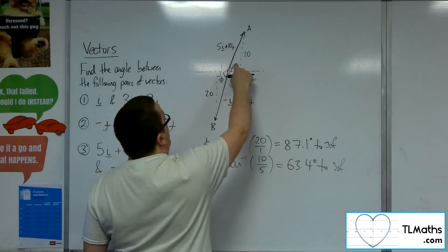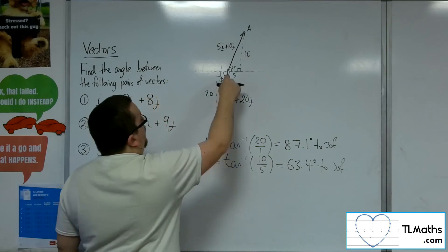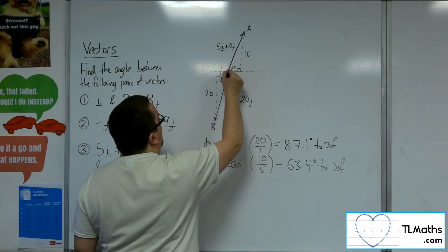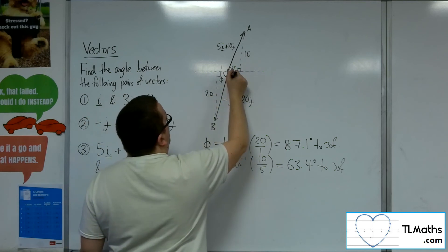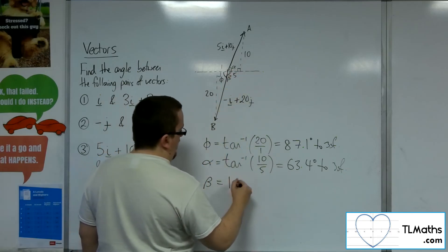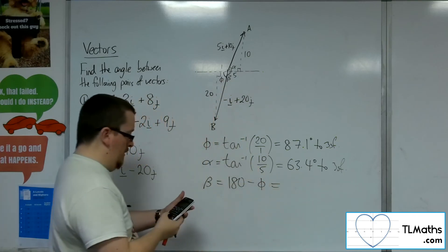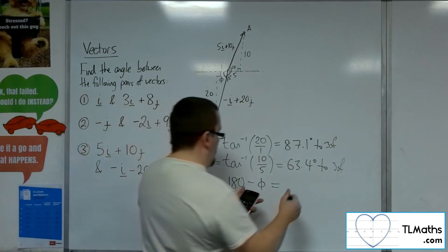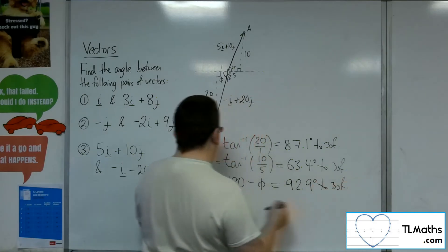So I've got that angle and that angle there. So now if I work out that angle, this angle here, I can add that onto alpha. So let's call that beta. So beta is going to be 180 take away phi. So 180 take away the inverse tan of 20. So that's 92.9 degrees to 3 sig fig. That's beta.